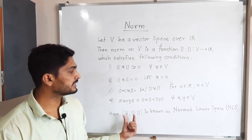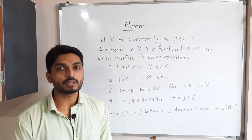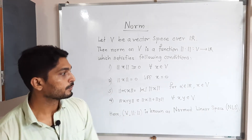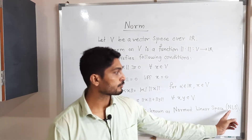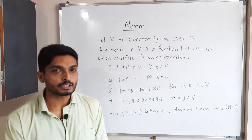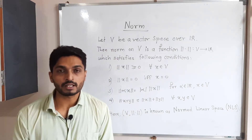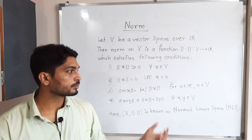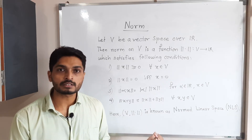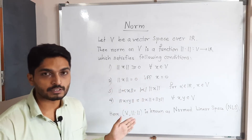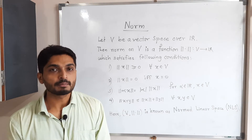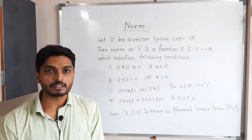If these four conditions are satisfied, we can declare it as a norm. V together with this norm is known as a normed linear space. We use the short form NLS. Whenever in our next videos I use the word NLS, that means normed linear space — that means that function satisfies these four properties.